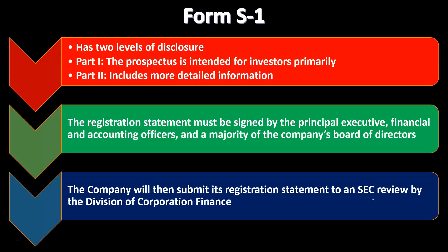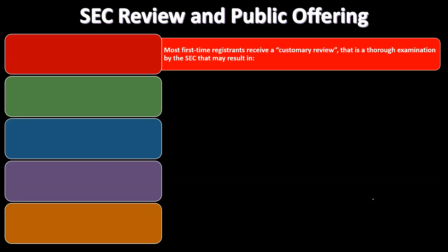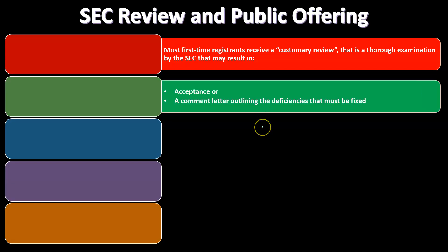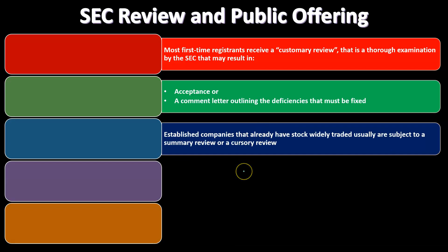The company will then submit its registration statement for an SEC review by the Division of Corporation Finance. Most first-time registrants receive a customary review — a thorough examination by the SEC that may result in either acceptance after this examination process or a comment letter outlining the deficiencies that must be fixed. So they either say everything was acceptable, or you get a letter asking you to fix specific items.